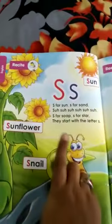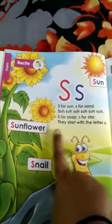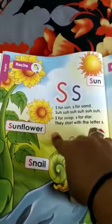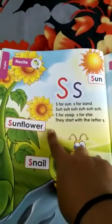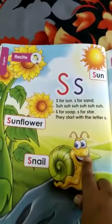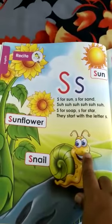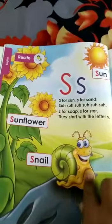Look at here, one more picture — that is sunflower and snail. S for sunflower. Sunflower looks like a sun, that is called a sunflower. And snail — it can live in water or on land also.